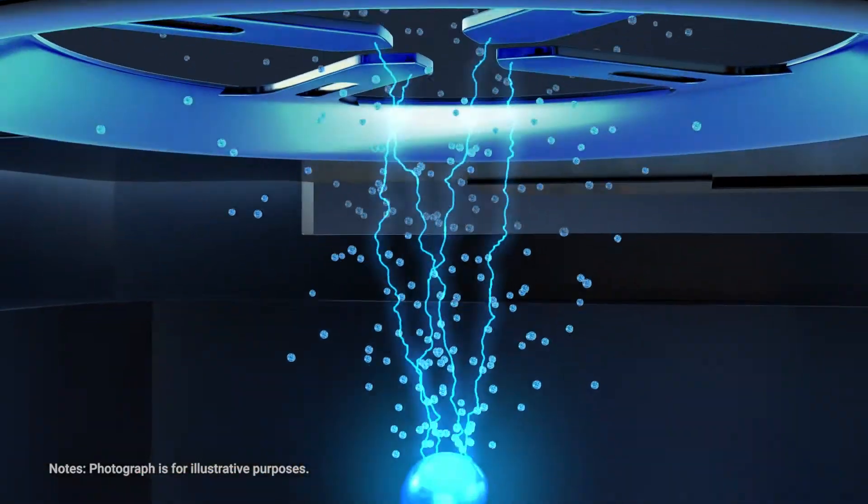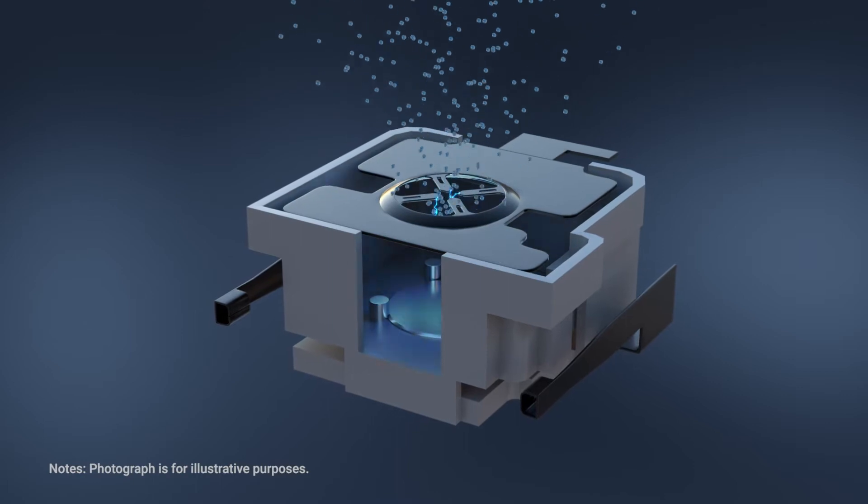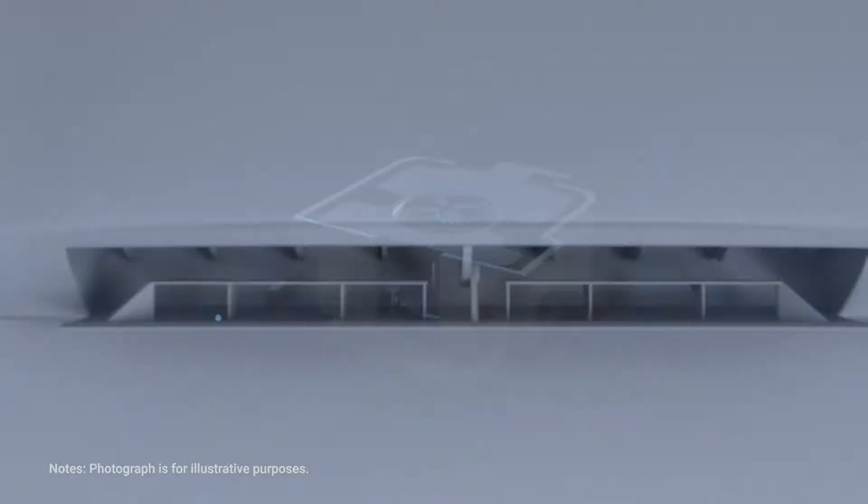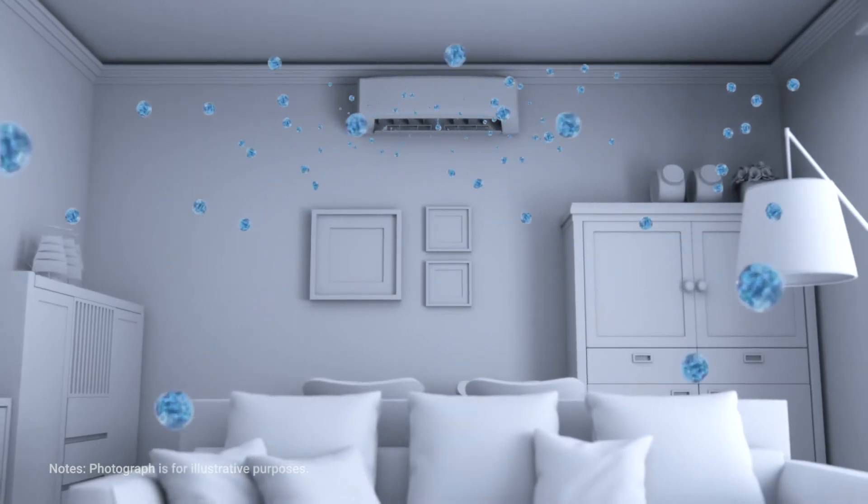Nano E consists of hydroxyl radicals wrapped in a water bubble. This allows the hydroxyl radicals to not immediately react with the environment, but to survive for about 10 minutes after being released into the air via a Panasonic air conditioner.